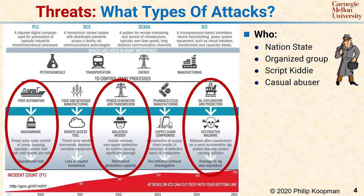Another class of threat actor is the casual abuser — like someone who walks through a parking lot trying all the car doors to see who left one unlocked. Finally, there are insiders who can compromise security through malicious intent or plain negligence. An ex-employee can do a lot of damage, especially if they retain a master password. Even well-intentioned employees can compromise security by unknowingly setting weak passwords, accidentally loading malicious software, or overriding safety mechanisms when under pressure to get the job done.